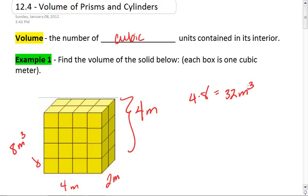In other words, we have length times width times height, four times two times four, which equals 32 cubic meters.